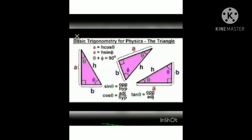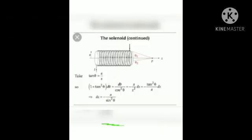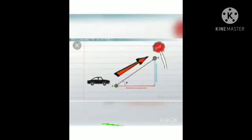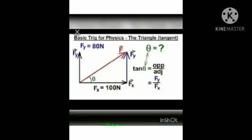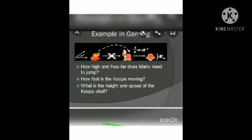Trigonometry in physics: trigonometry is used to find the components of vectors, model the mechanics of waves and oscillations, sum the strength of fields, and use dot and cross products. Even in projectile motion there are many applications of trigonometry. Trigonometry in video games: in the game Mario, when you see him smoothly glide over the roadblocks, he doesn't jump straight along the y-axis.